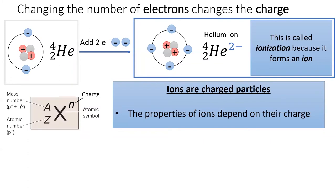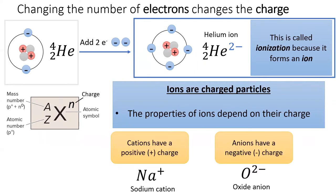Recall that adding or removing electrons from an atom creates a charged particle called an ion. The properties of an ion depend on its charge, especially positive versus negative. When ions have a positive charge, we call them cations. When ions have a negative charge, we call them anions.